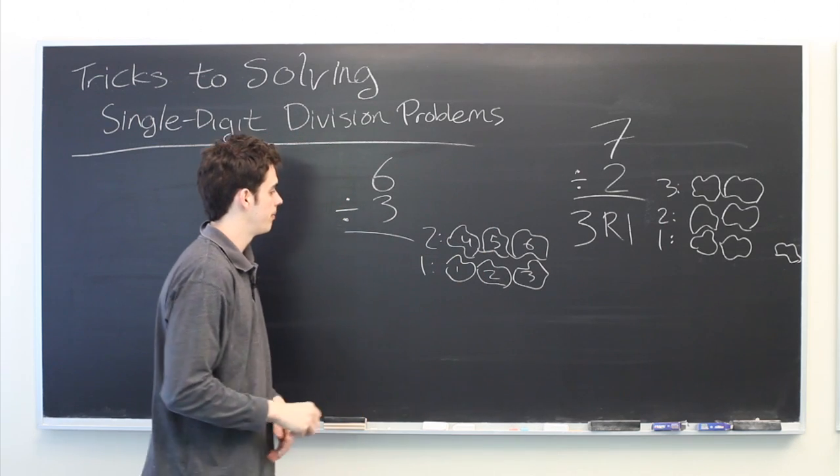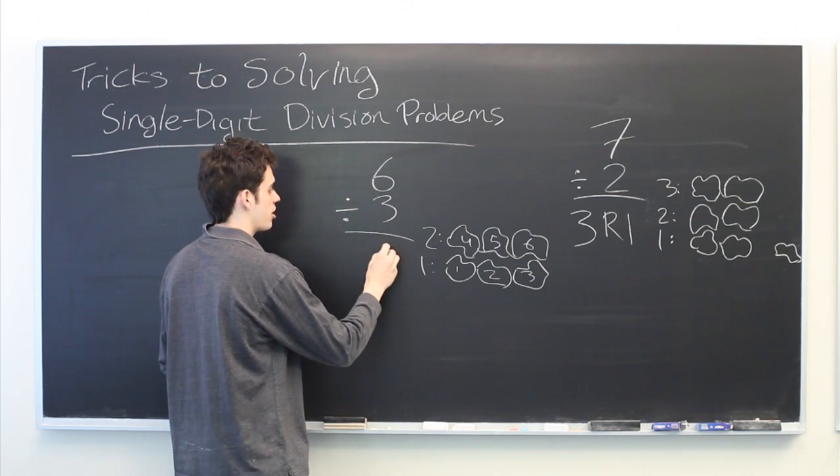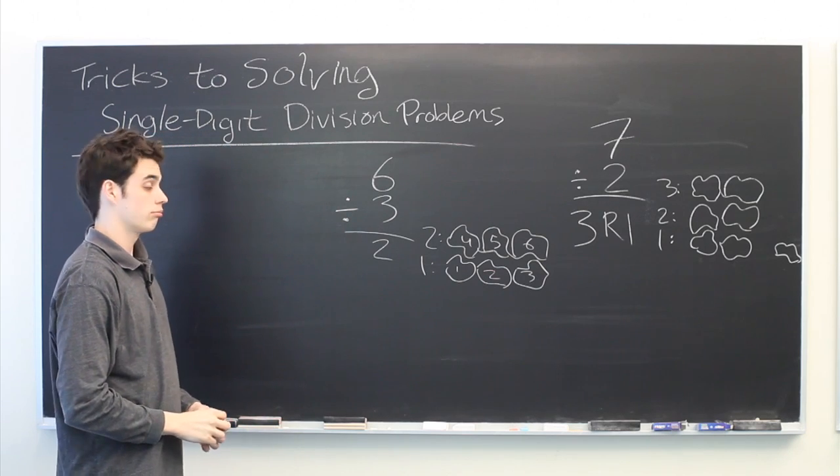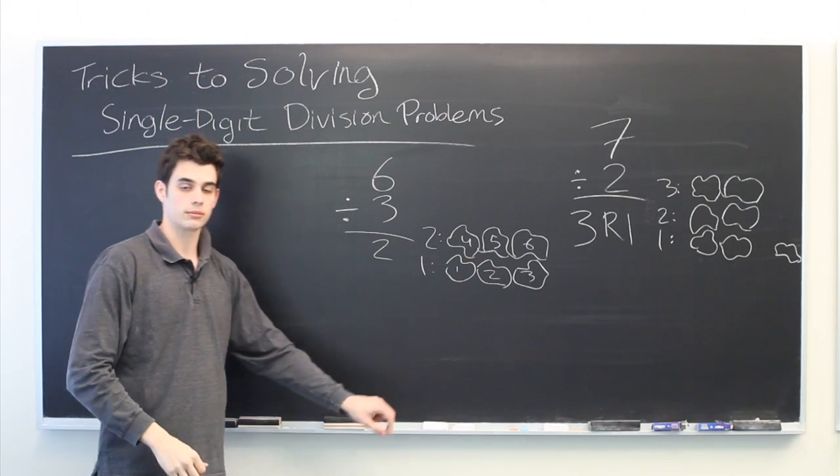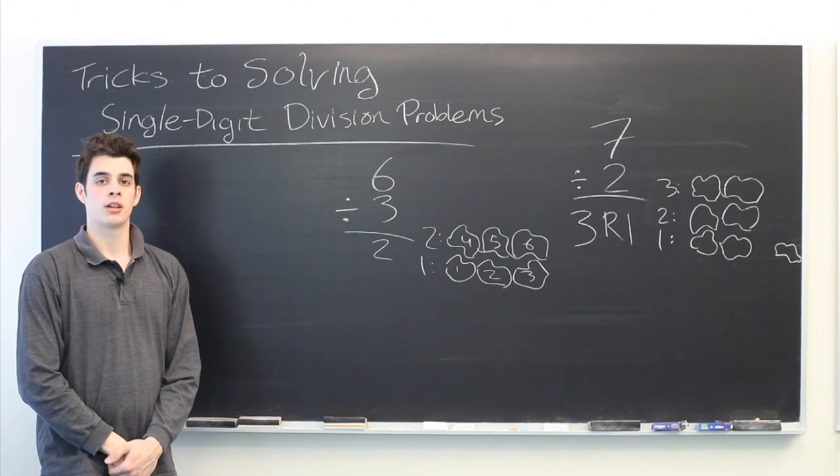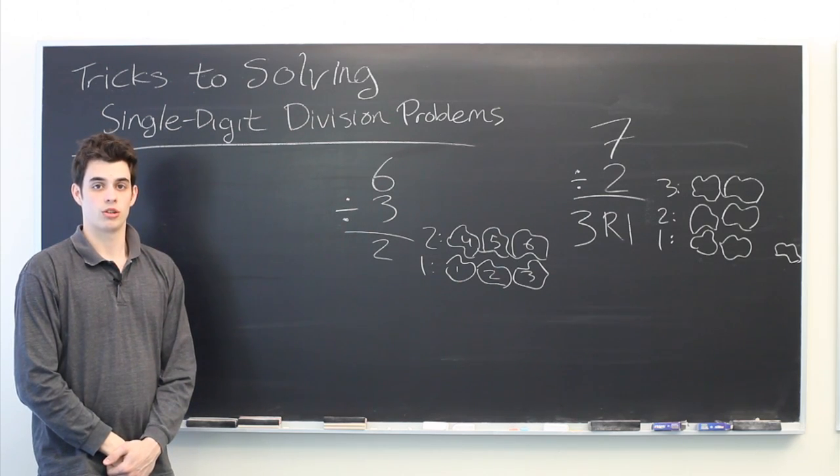There are 2 rows of blobs. So the answer is 6 blobs divided by 3 blobs is 2 blobs. And that's all there is to it. My name is Ryan Malloy and we've just discussed tricks for solving division problems.